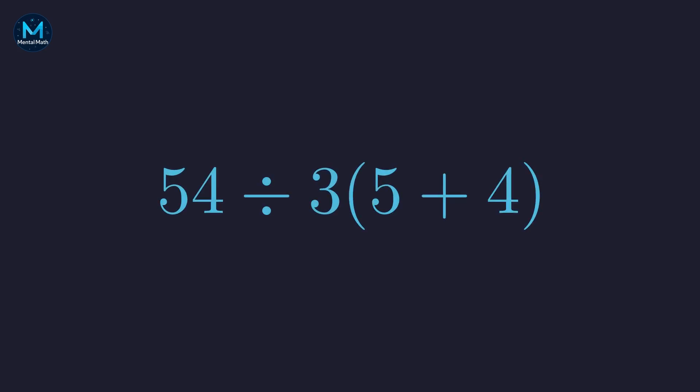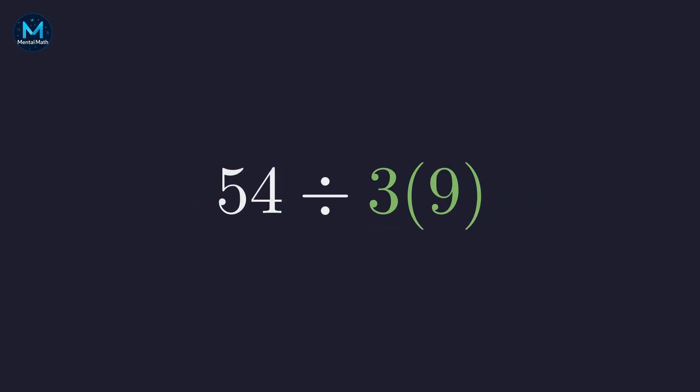Let's apply the rules. Parentheses first. 5 plus 4, straightforward enough, which gives us 9. Now this 3 times 9 is just implied multiplication. Let's make it explicit.